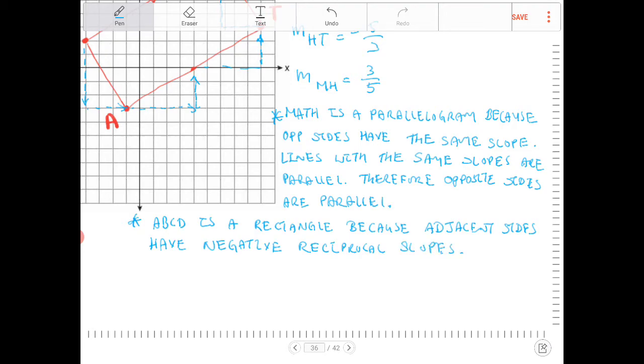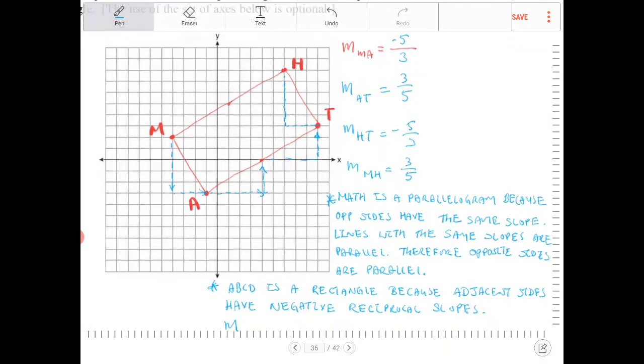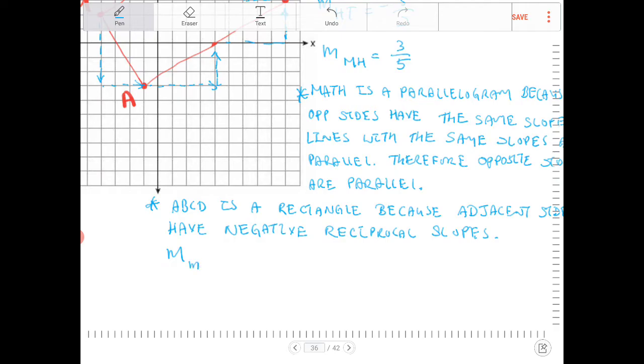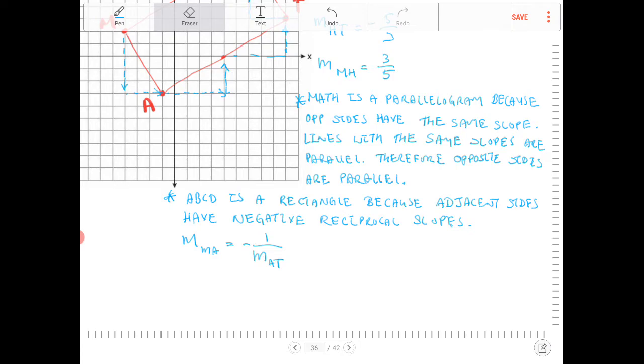M of MA is equal to negative one over the slope of AT. And the slope of AT is equal to... Actually, I don't even need to do this so many times because if I have at least one... If there's only... If I show that there's just one adjacent sides, one pair of adjacent sides having negative reciprocal slopes, then that means there's one right angle.